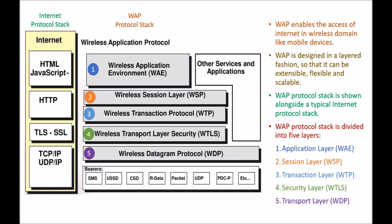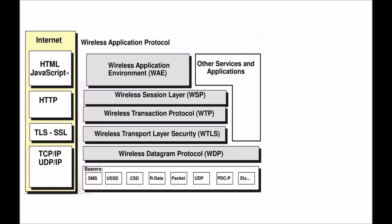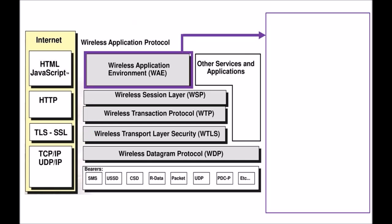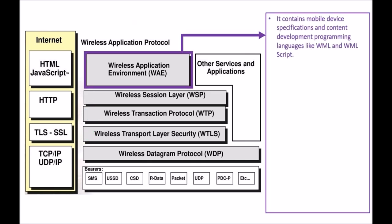So on the left hand side we are having the internet protocol stack, and next we are having WAP protocol stack which contains 5 layers. There are also other services and applications which can be present. Now we are starting with the WAP architecture in detail.